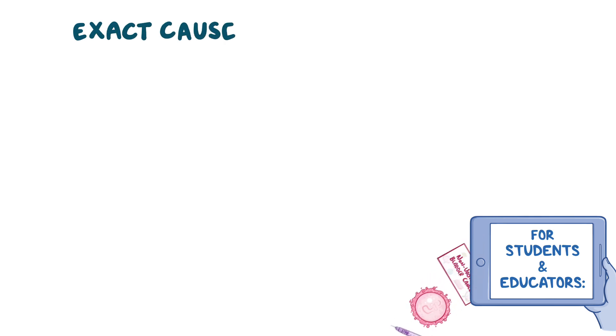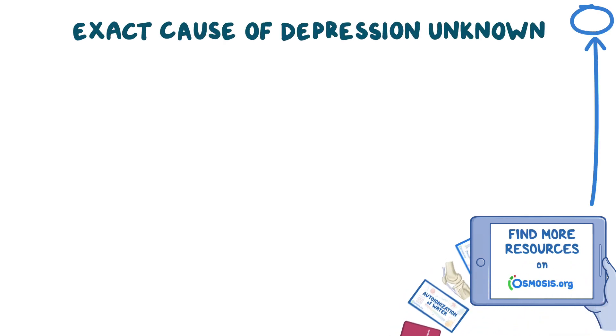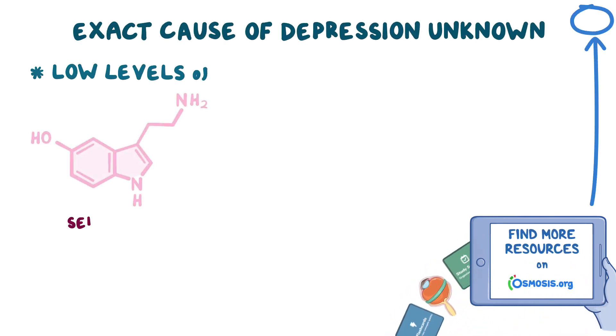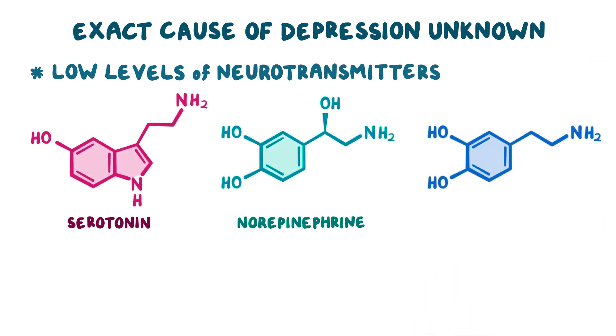Even though the exact cause of depression is still unknown, there is some evidence that suggests it's related to low levels of serotonin, norepinephrine, and dopamine, which are also called monoamines because they only have one amine group.